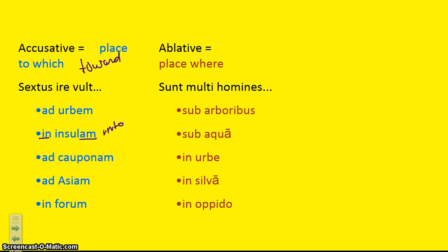When we want to show location, we use the ablative case to show the place where something occurs, using specific ablative prepositions. For example: 'sunt multi homines sub arboribus' — many men are under the trees; 'sub aqua' — underwater; 'in urbe' — in the city; 'in silva' — in the woods; 'in oppido' — in the town. In this case, 'in' is used with the ablative case, so we translate it as 'in' and not 'into' or 'onto'.